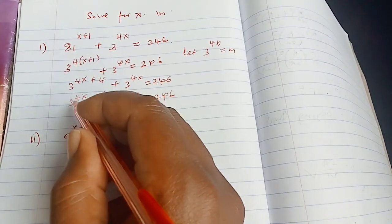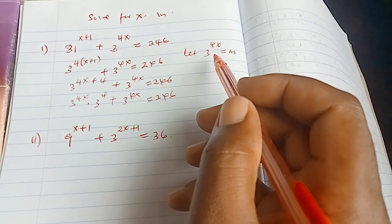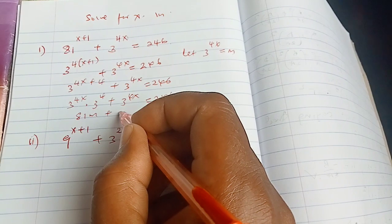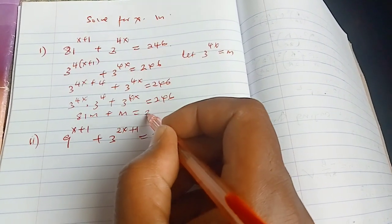We are almost done. So this is now what we are calling m according to this assumption. So we are going to say this is like 81m plus m equals to 246.